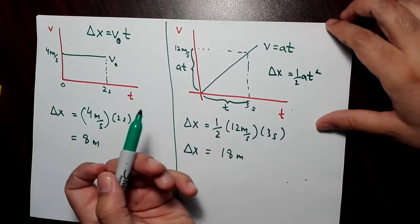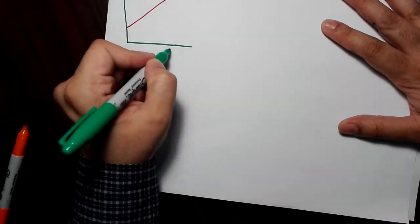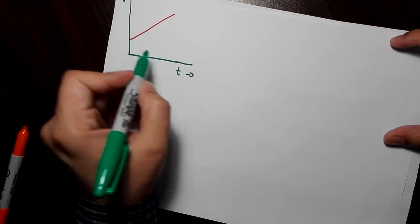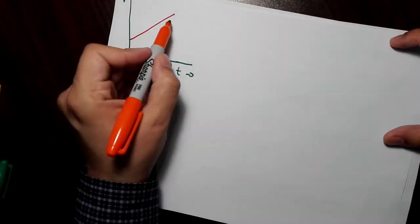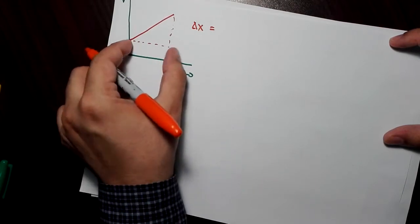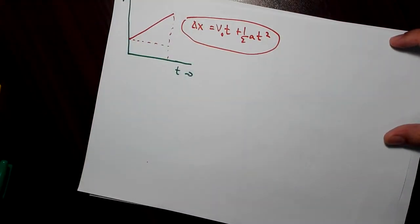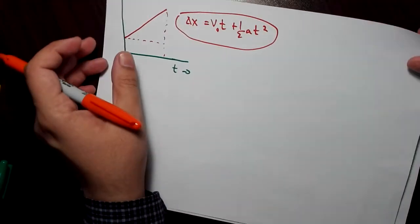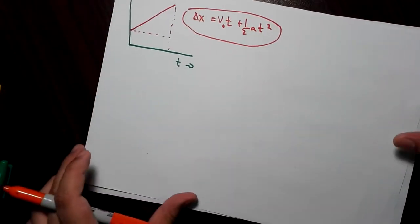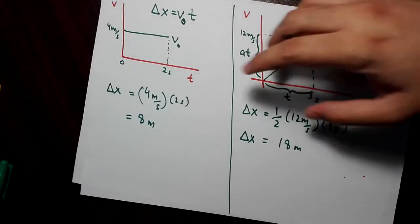If there is some initial velocity v-naught, the velocity-time graph has a rectangle plus a triangle on top. The area of the rectangle is v-naught times t, and the triangle contributes one-half a t squared, giving delta x equals v-naught t plus one-half a t squared. This is the equation of motion for constant acceleration starting with initial velocity v-naught.